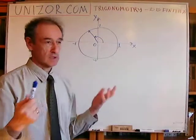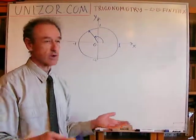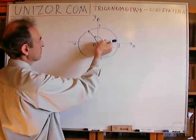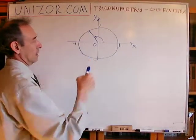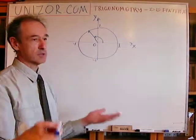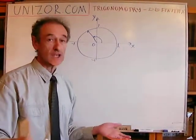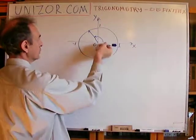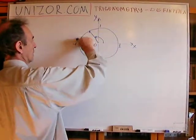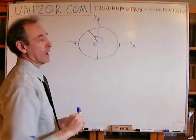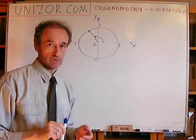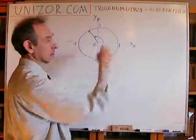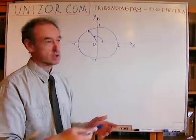It can be in degrees — for instance, 90 degrees means we are moving this way. Or it can be in radians: pi radians would be half a circle, because the whole circle is 2π radians.